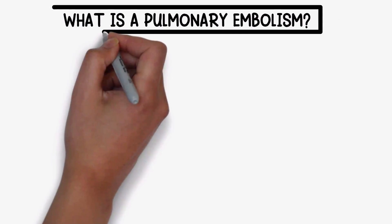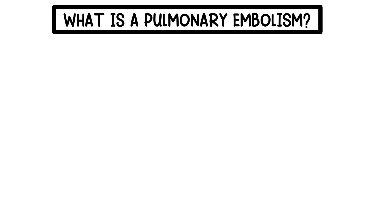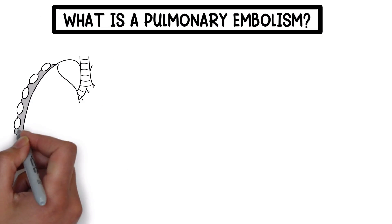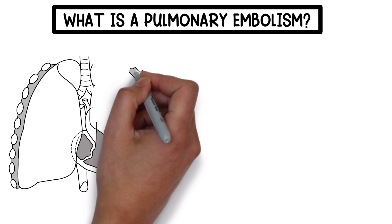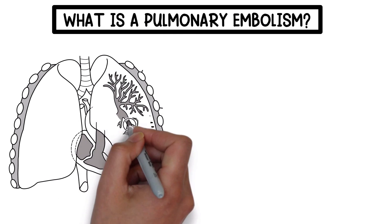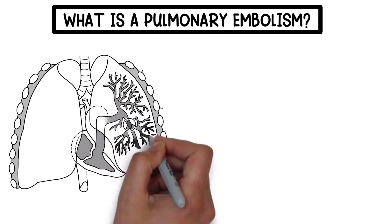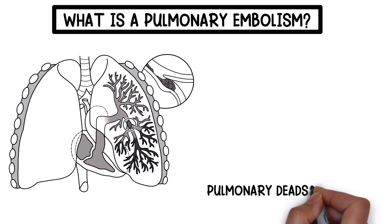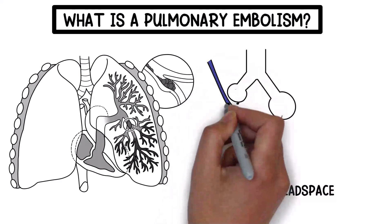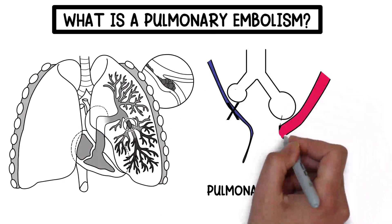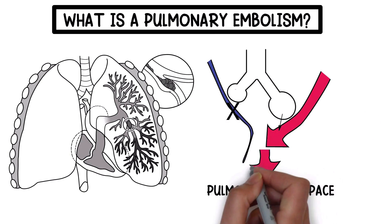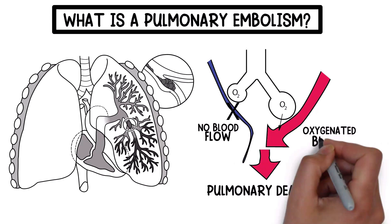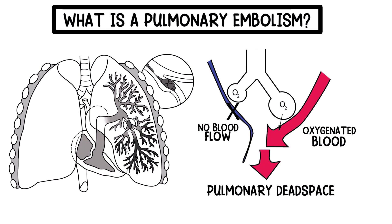What is a pulmonary embolism? It's a blockage in one of the pulmonary arteries that is caused by a blood clot that travels to the lungs from the legs or other parts of the body. It results in pulmonary dead space, which means that the lungs are receiving adequate ventilation but no perfusion due to the blockage within the pulmonary artery.